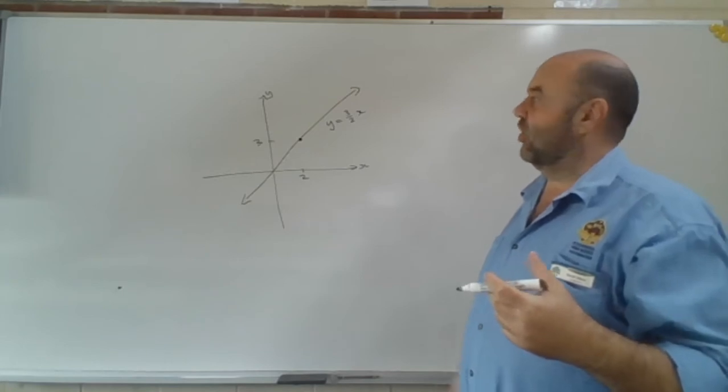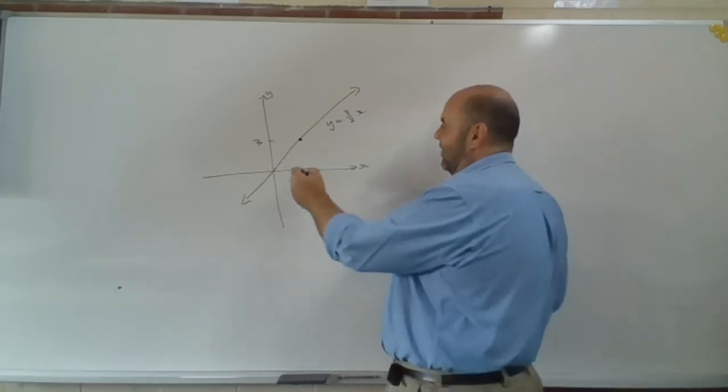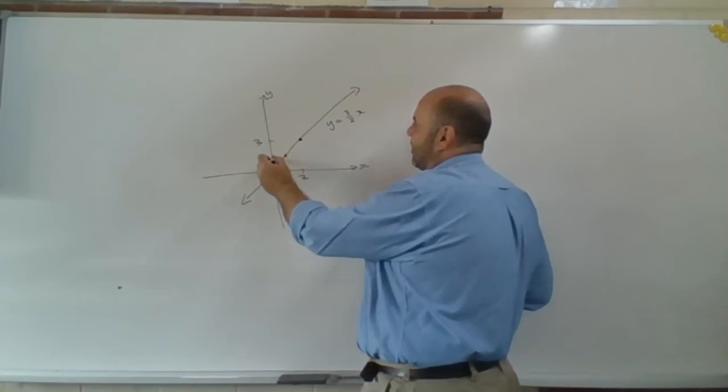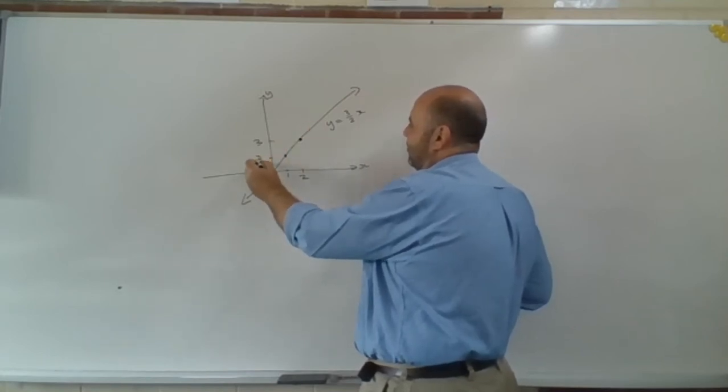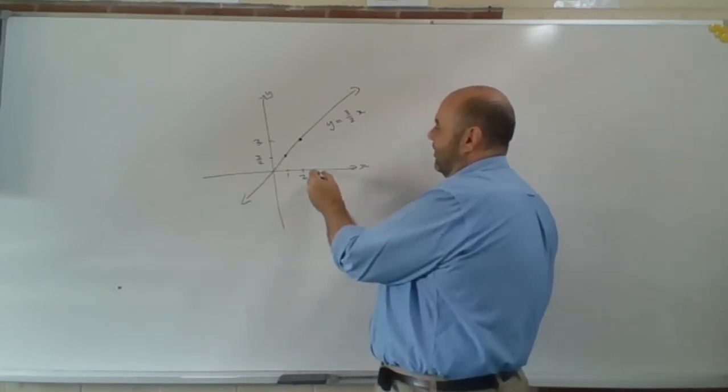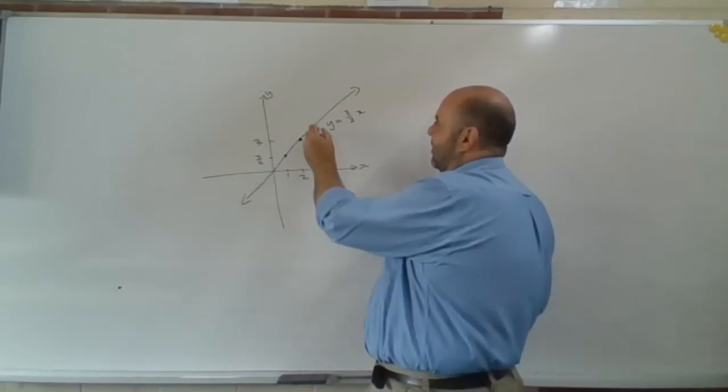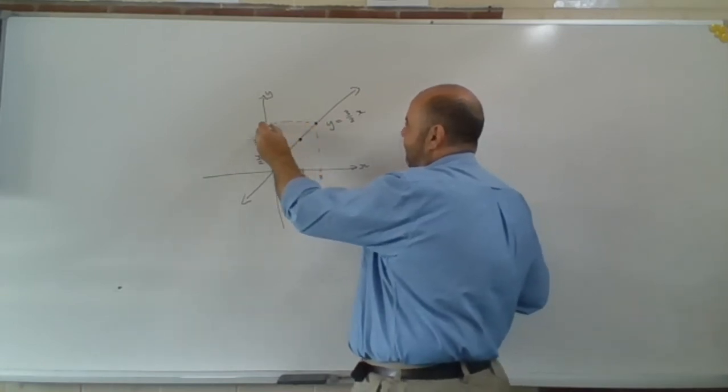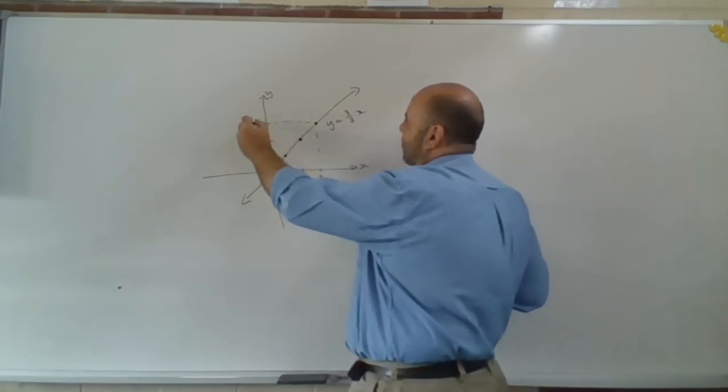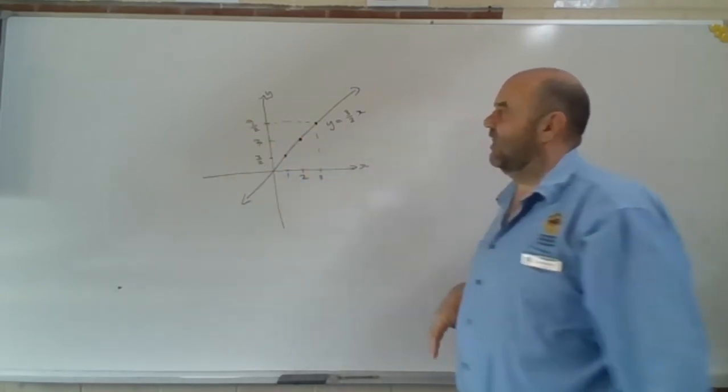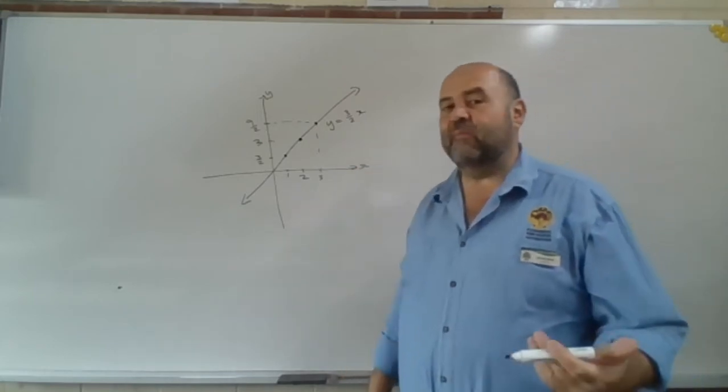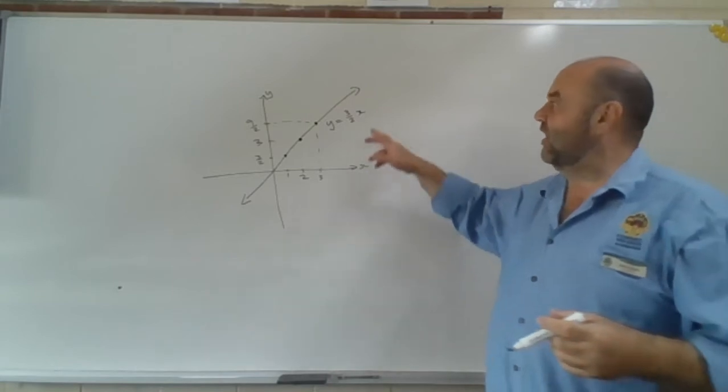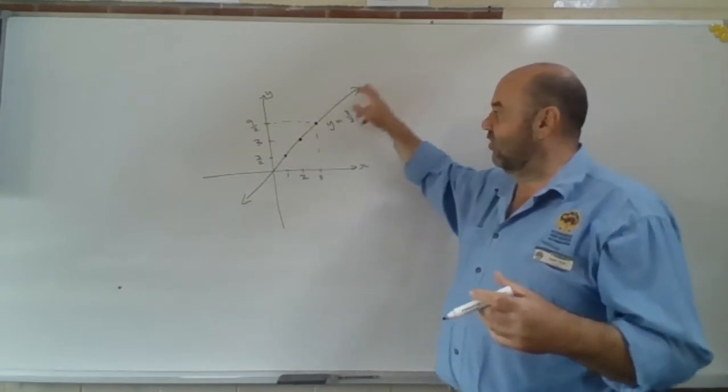So I could have a point down here, say, where x equals 1 and where y equals 3 over 2. Or I could have a point over here where x equals, say, 3, and y equals 9 over 2. I mean, really, I could have any point along there. But I couldn't just have any point. It's got to be a point that scales, if you like, along that line.